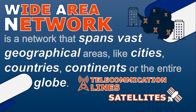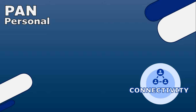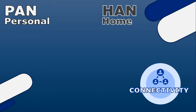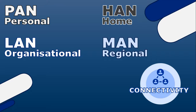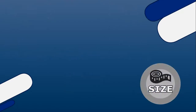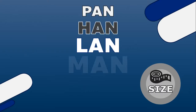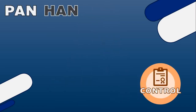To recap when it comes to connectivity: you've got the PAN for personal connectivity, the HAN for home connectivity, the LAN for organizational connectivity, the MAN for regional connectivity, and the WAN for global connectivity. Regarding size, PANs cover the smallest area, followed by HANs, LANs, MANs, and then WANs covering the largest geographical areas.